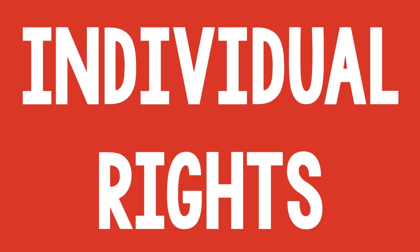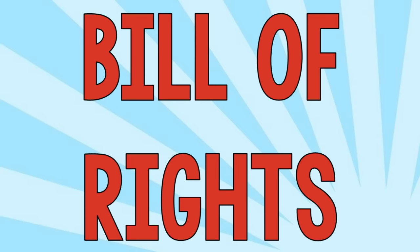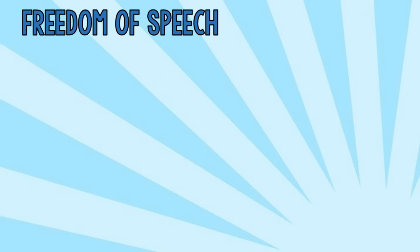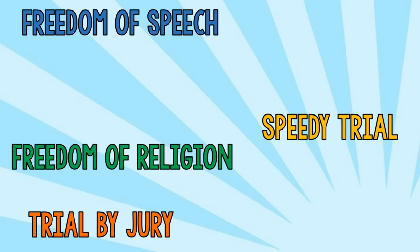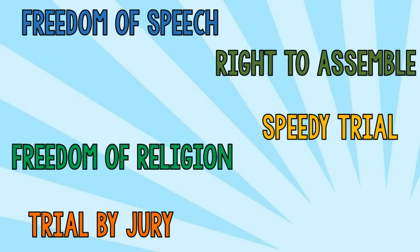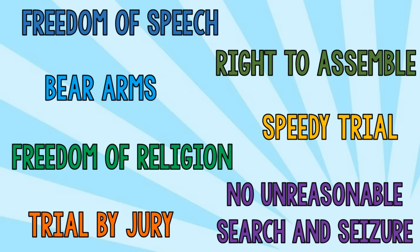Individual Rights. Rights are freedoms that people have that must be protected by the government, according to the Constitution. The Bill of Rights lists many of these freedoms, and examples include the right to freedom of speech, trial by jury, right to a speedy trial, freedom of religion, the right to assemble, the right to bear arms, protection from unreasonable search and seizure, and much more.